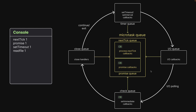It so happens that the event loop, before leaving the IO queue and entering the check queue, makes another check with the microtask queues. It first checks the next tick queue, sees there is a callback, and runs that callback. Finally, when the microtask queues are empty, the event loop proceeds to the check queue, dequeues the callback function, and executes it. This results in the last message being printed in the console. The main point to take away here is that callbacks in the microtask queues are executed between the IO queue and the check queue callbacks.